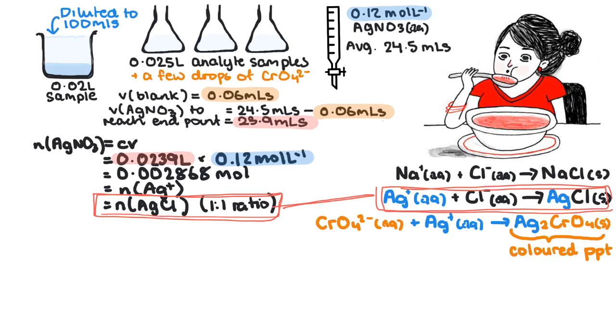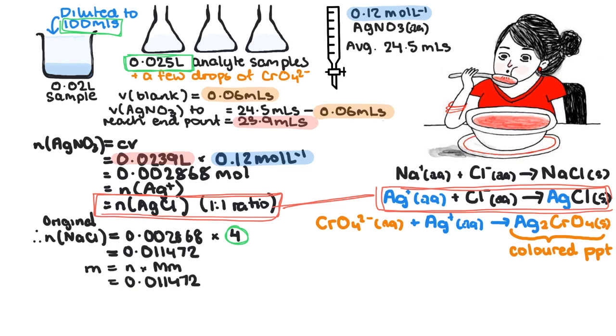Now the actual moles in the original sample needs to be multiplied by 4 since we only use 25% of the original sample. And now we can convert the moles into mass. Moles times molar mass. This is the mass.